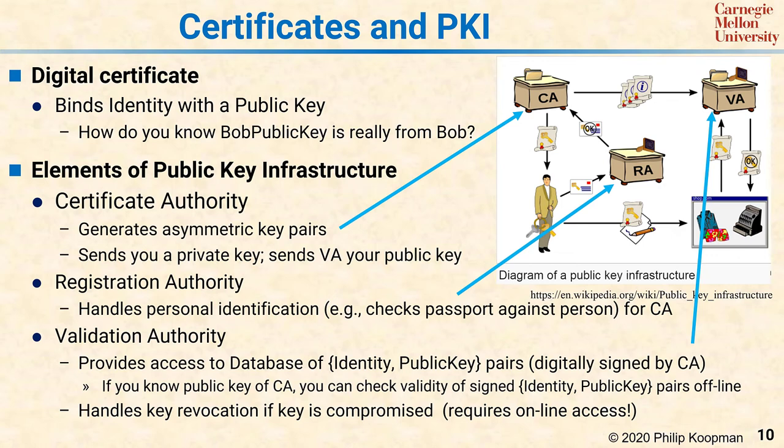It's a little complicated to set up, but once the initial part is done, the entity doing the heavy lifting is the VA — because once the identity-public-key pair is established, everyone simply queries the VA to confirm the person saying they're Bob is really Bob. Also, if you want to talk to Bob and have never exchanged messages, you can look up Bob's public key at the VA and already know the key. One issue that can happen is a key gets compromised — for example, someone breaks into Bob's computer and steals his private key. So the VA also has the ability to do key revocation, marking that key as no longer valid.